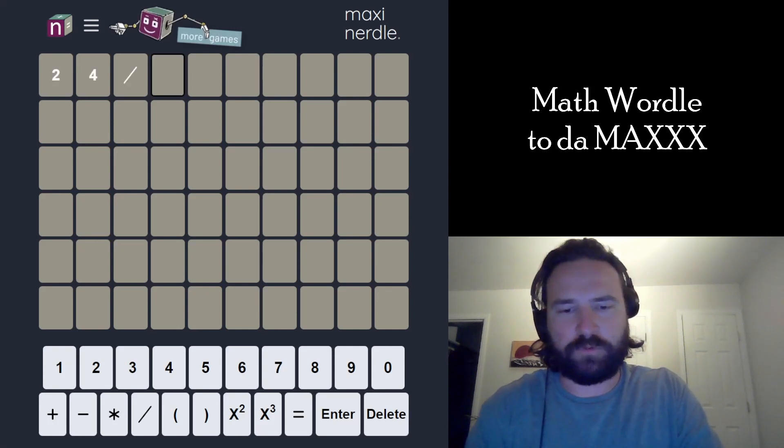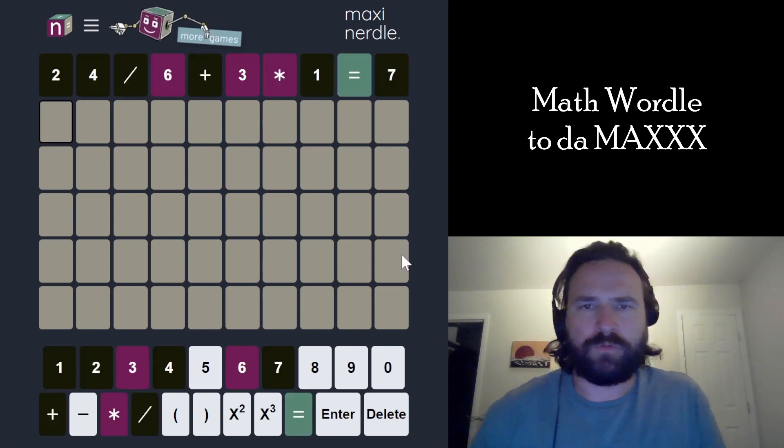All right, let's match the max interval. We get 24 divided by 6 plus 3 times 1 equals 7. Beautiful, dude.